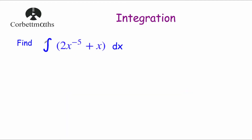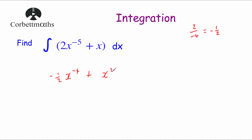Next: integrate 2x to the power of negative 5 plus x with respect to x. Looking at 2x to the power of negative 5: increase the power by 1 to get x to the power of negative 4, then 2 divided by negative 4 — 2 divided by 4 is a half, so this is minus a half — giving minus a half x to the power of negative 4. Then integrating x: increase the power to x squared, 1 divided by 2 is a half, so a half x squared. Then plus c.